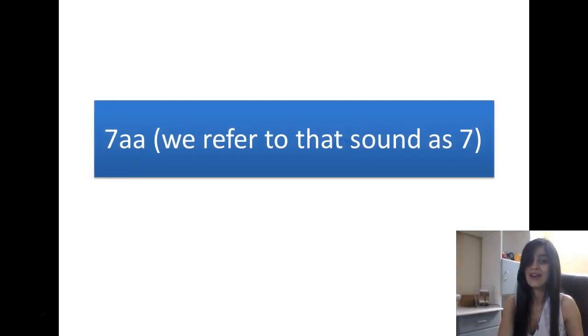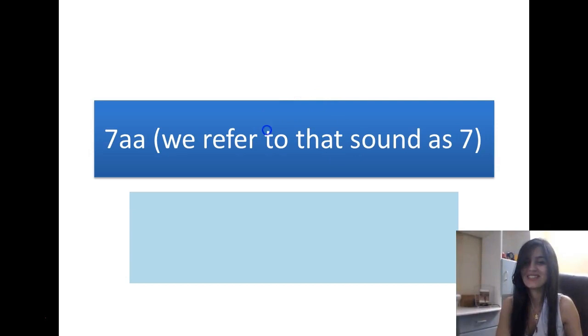Then we have a letter which is a little difficult for English or maybe other language speakers. We refer to that sound as a seven in the English letters — the number seven. So it is like this H. The pronunciation is H. And we write it like this. This is the shape of the letter H.